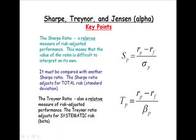What are the key points? We have three different measures of risk-adjusted portfolio performance. The Sharpe ratio is a relative measure — you can't simply look at the value of the Sharpe ratio and determine whether it was good or bad. It's very difficult to interpret on its own; it must be compared to another Sharpe ratio. The significance of the Sharpe ratio is relative to a comparison with another Sharpe. Also, the Sharpe ratio adjusts for total risk — standard deviation is in the denominator — so the Sharpe ratio looks at excess return per unit of total risk.